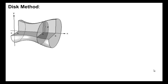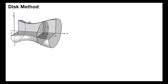Now we're going to talk about the disk method. The disk method is a way of finding volume for a solid of revolution. A solid of revolution is when you have a function — this one right here — and you revolve it around some line.